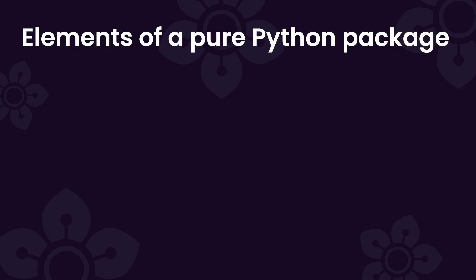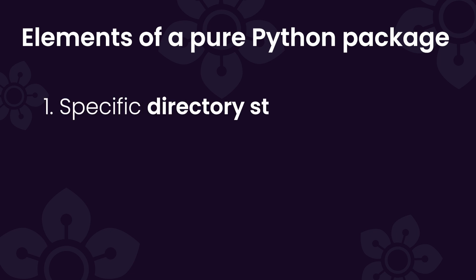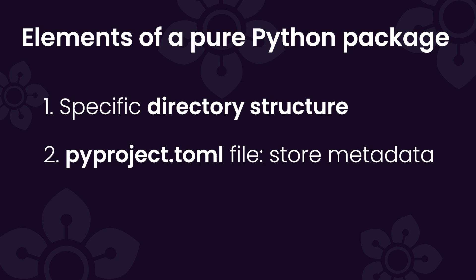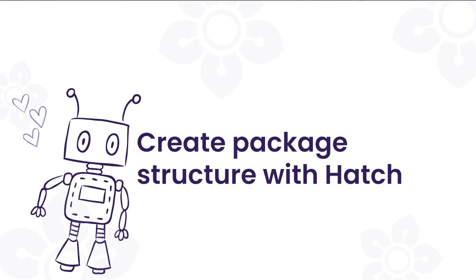There are a couple of things you need to know about to create a Python package. The first is that you need a very specific directory structure, so we're going to create that together. You also need a PyProject.toml file, which stores all the metadata for your package. And finally, you're going to want an __init__.py file. So let's get started.